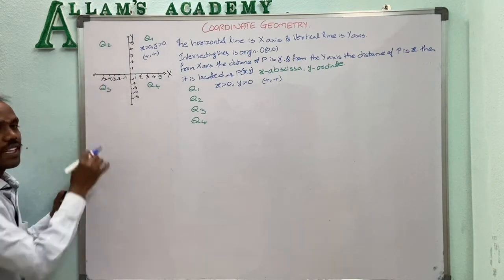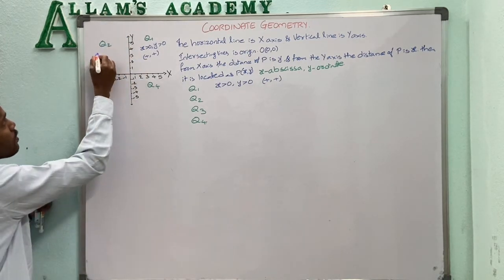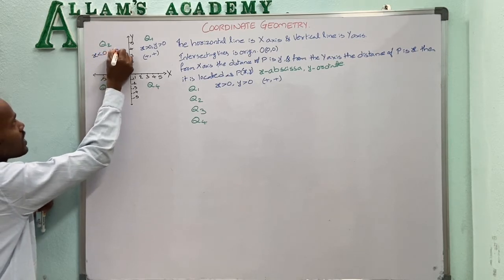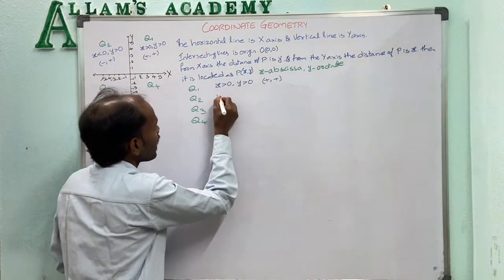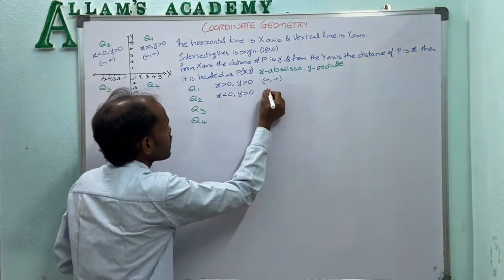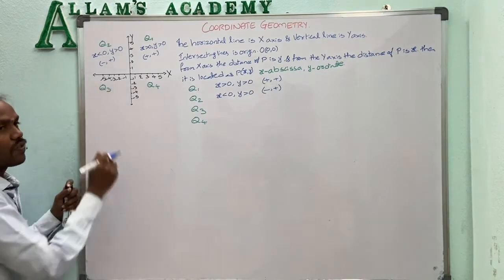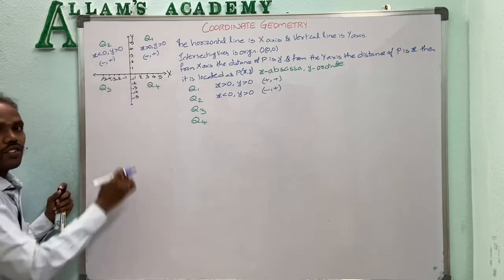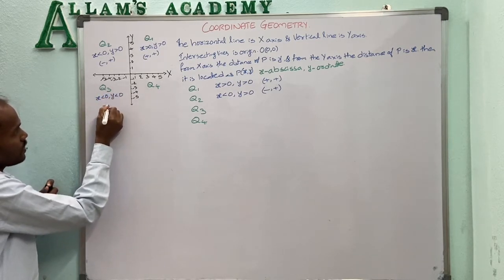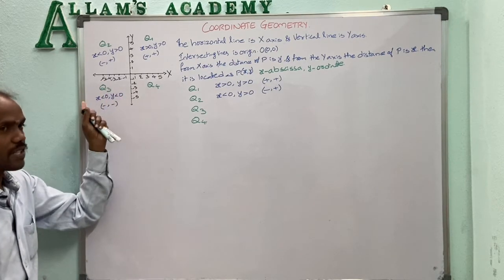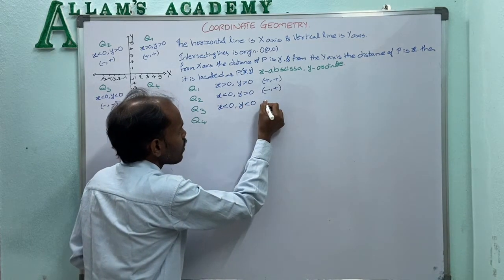In the second quadrant Q2, the x-coordinates are negative and y-coordinates are positive. That means x < 0 and y > 0, so the point is (−, +). In the third quadrant Q3, both x and y coordinates are negative: x < 0 and y < 0, denoted as (−, −).